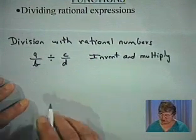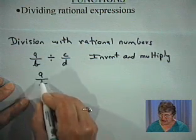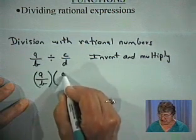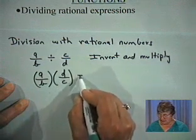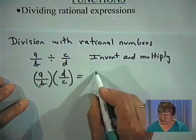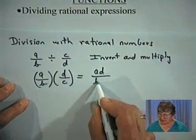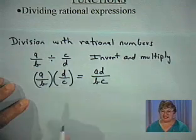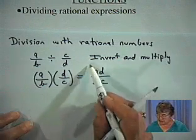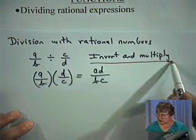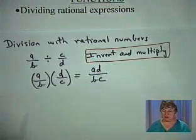So to invert and multiply, we're going to say A over B is going to be multiplied by D over C. That means it's a multiplication problem, and we can say this is A times D divided by B times C. The words that are really crucial in division of rational expressions are going to be invert and multiply.